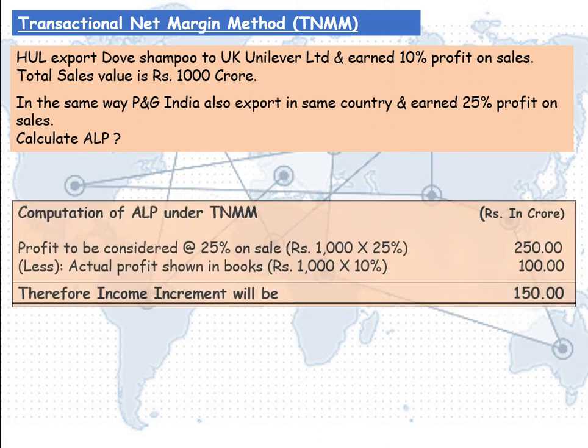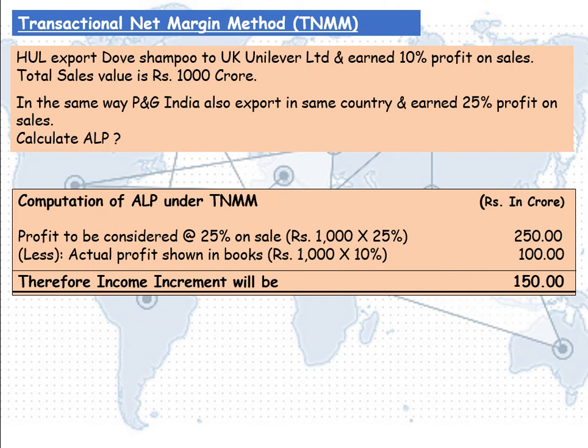By applying the higher profit margin, we arrive at the incremental income. Profit to be considered at 25% on sale: Rs 1,000 crore into 25% equals Rs 250 crore. Less actual profit shown in the books by Hindustan Unilever: Rs 1,000 crore into 10%, that is Rs 100 crore. Therefore, income increment will be Rs 150 crore. Hindustan Unilever has to increase their sales by Rs 150 crore and pay tax on the same.